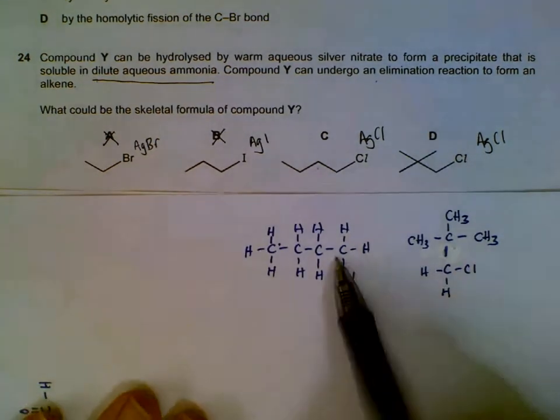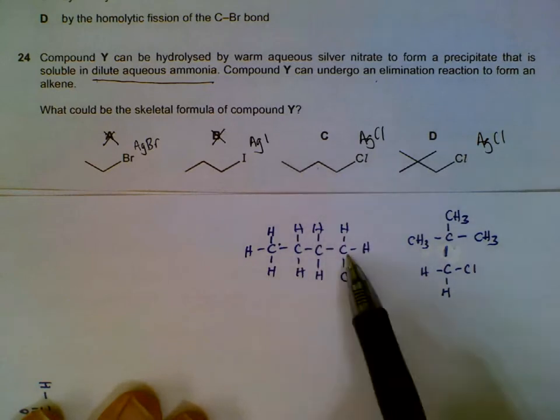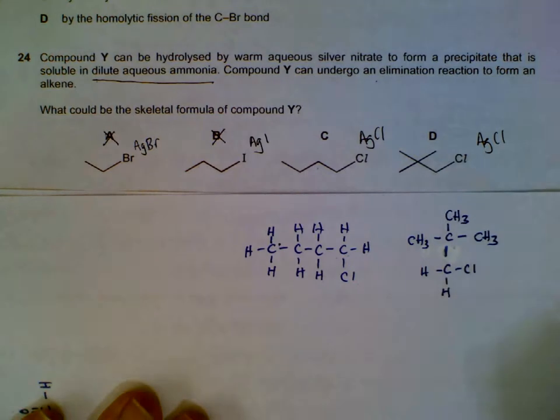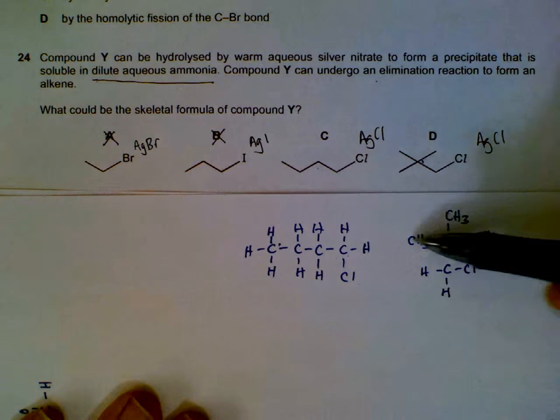This is the structure for C: one, two, three, four carbons with the chlorine. This is the structure for D: carbon surrounded by three methyl groups and then we have CH2Cl.